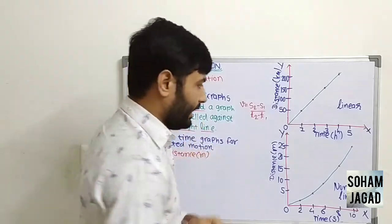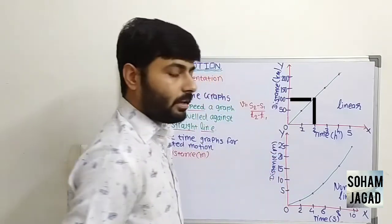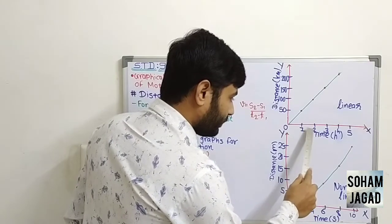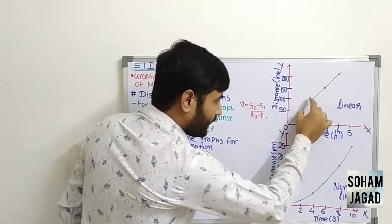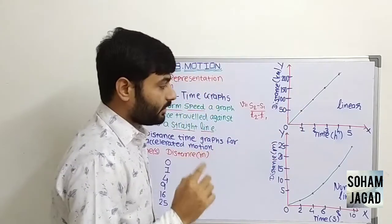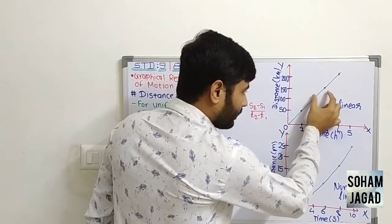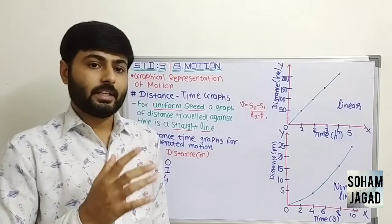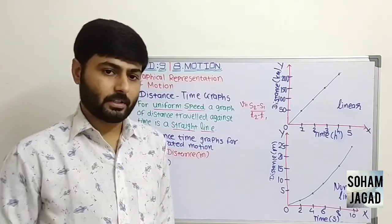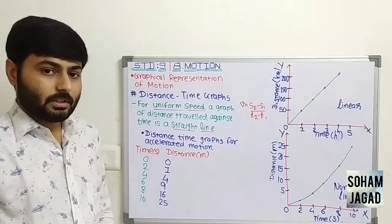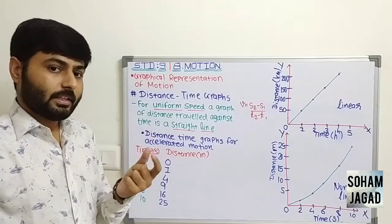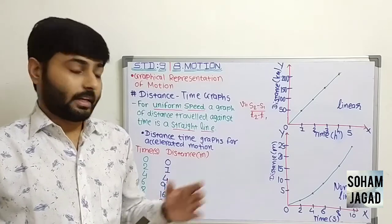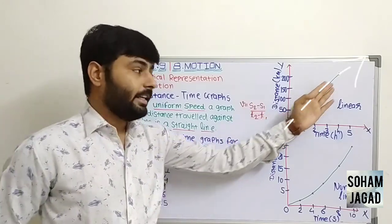In the second hour, the object reaches 100 km, which means in that one hour it covers another 50 km. In the third hour, the object covers another 50 km. So in each hour, the object covers 50 km — the same distance — which means the object has uniform speed. The graph of uniform speed is a linear graph.